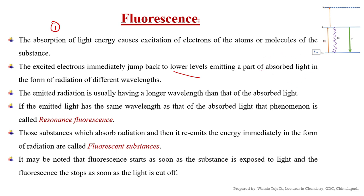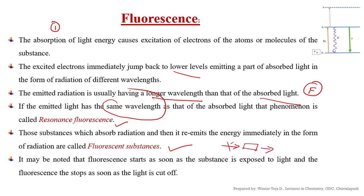The electrons come to lower levels by emitting a part of the absorbed light. You can emit a part of the absorbed light. The emitted radiation usually has a longer wavelength than that of the absorbed light. It may be noted that fluorescence starts as soon as the substance is exposed to light, and fluorescence stops as soon as the light is cut off.